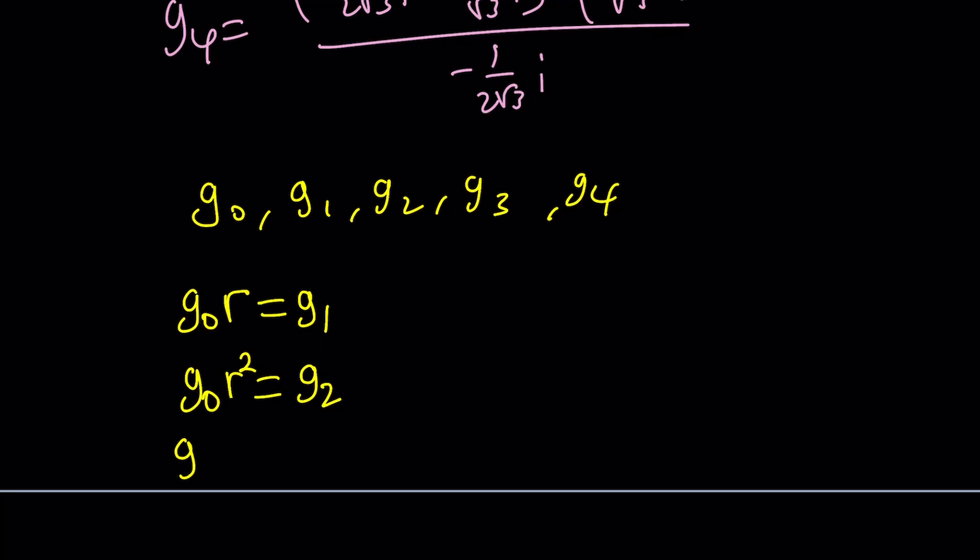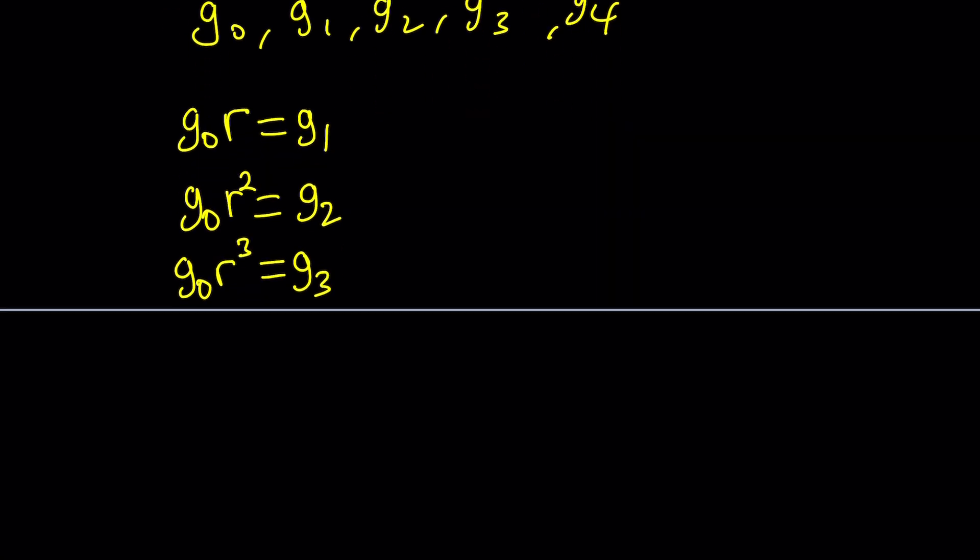And then, if you take G sub 0 and multiply by R squared, that's going to give you G sub 2. And if you take G sub 0 and multiply by R cubed, that's going to give you G sub 3. And then, finally, you're going to get G sub 4 when you multiply by R to the fourth power. So, by using all of these equations, you could get the values of R. First, you get something in terms of x, then find the value of R and just go from there. And this brings us to the end of this video.